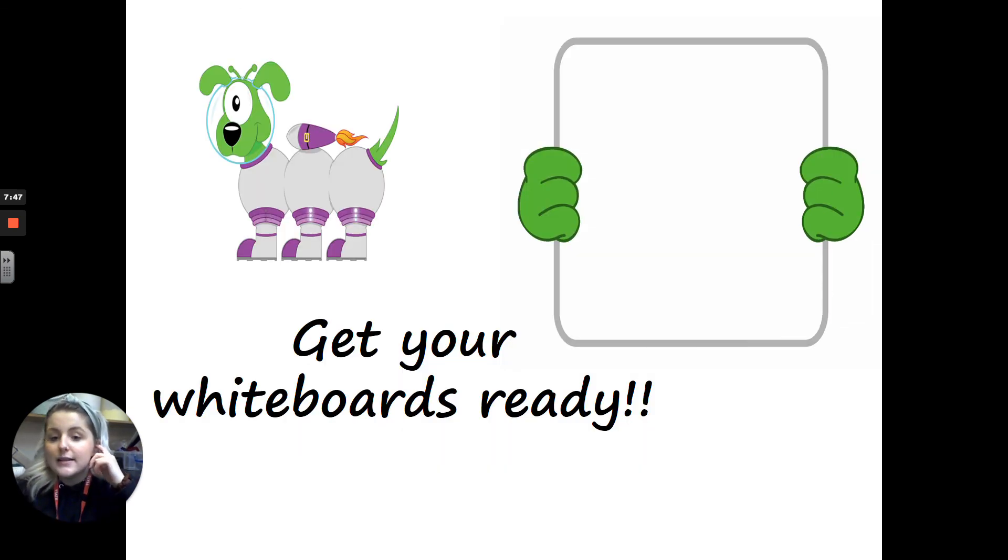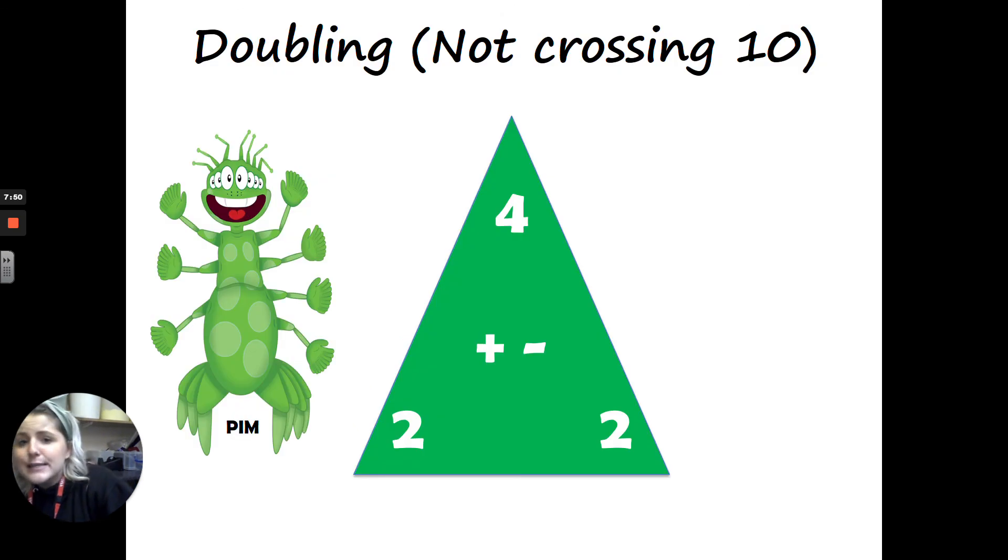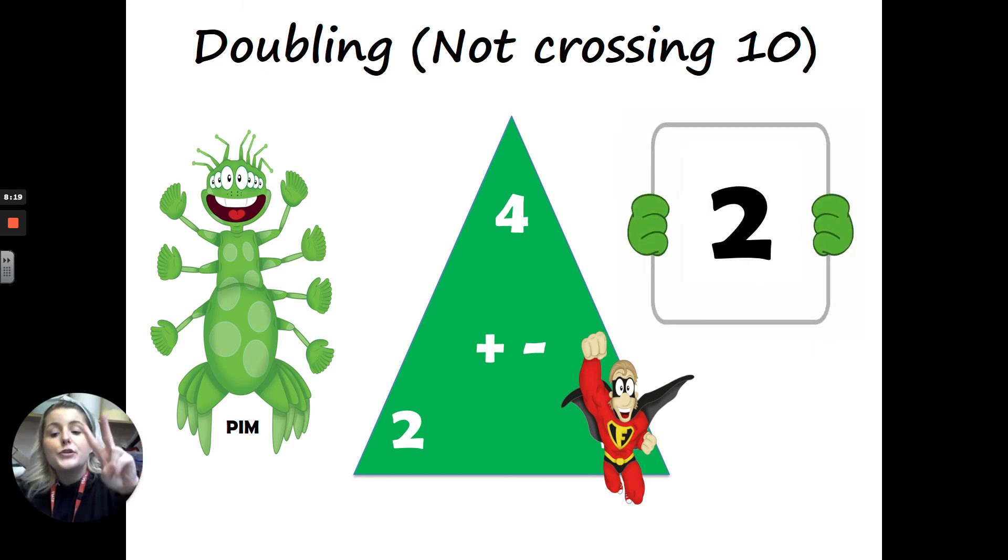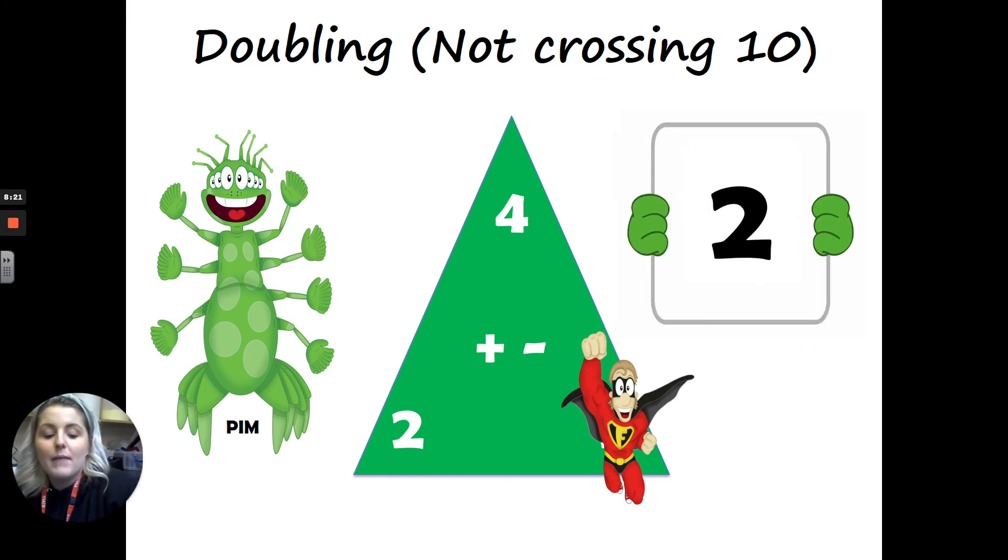Alright, get your pencils and paper ready again. We're going to go again, but this time I want you to write the number that is half of four. Half of four. What is half of four? Have a look at the triangle. What number's at the top? What number is in one of the corners at the bottom? I'm going to give you five, four, three, two, one. Show me your answers. Wow. If you've got two, then you are a maths star.